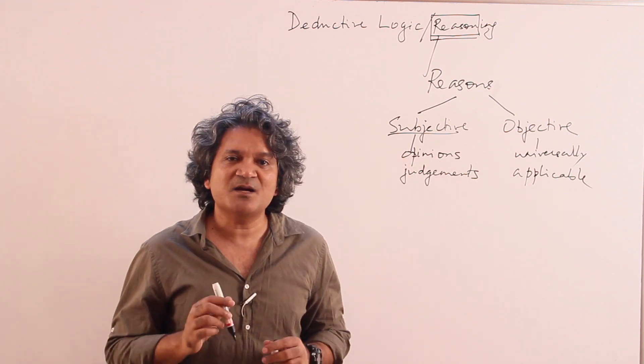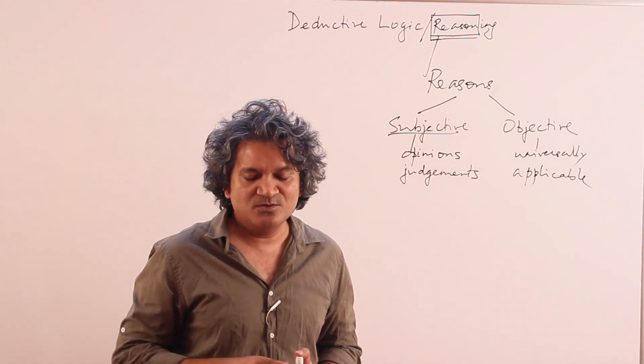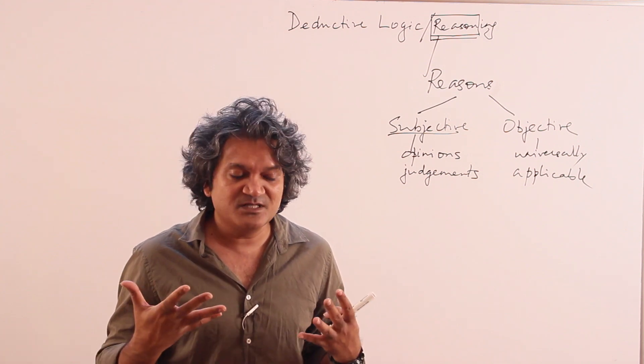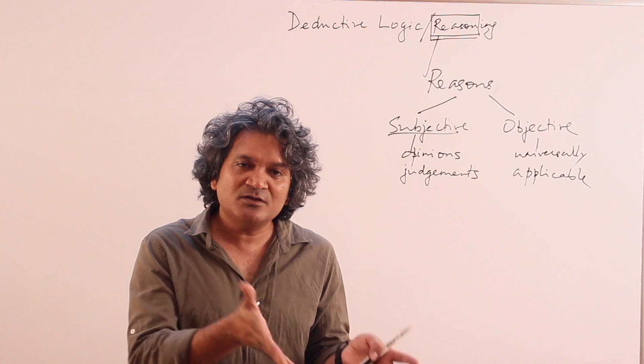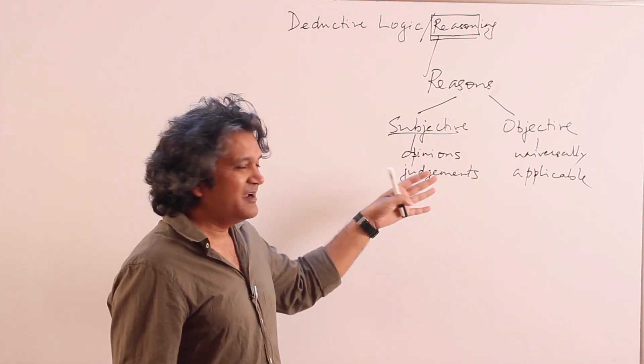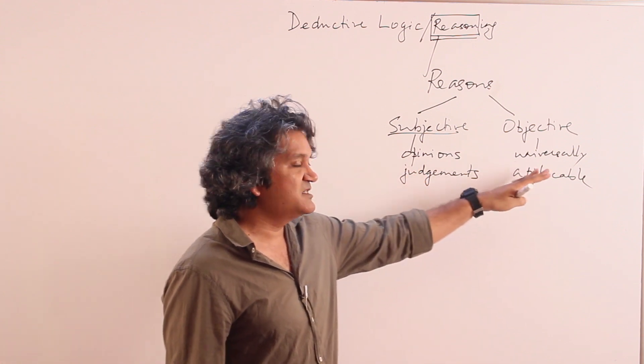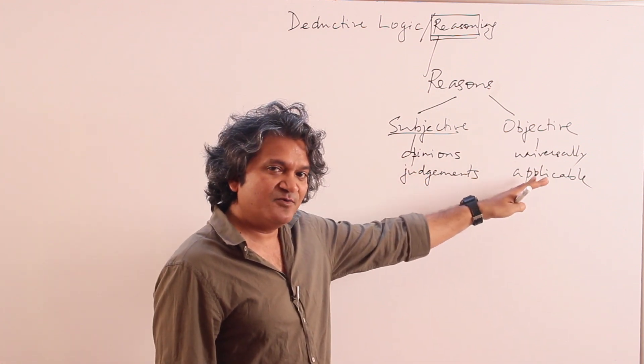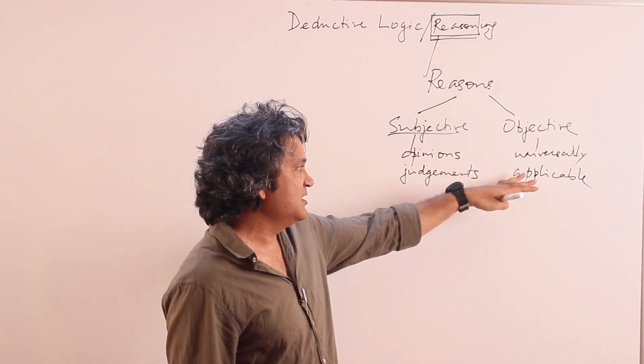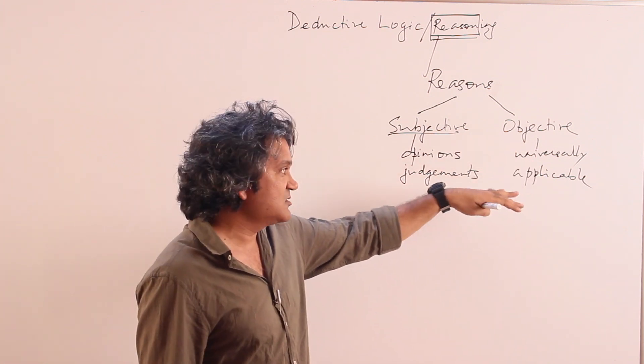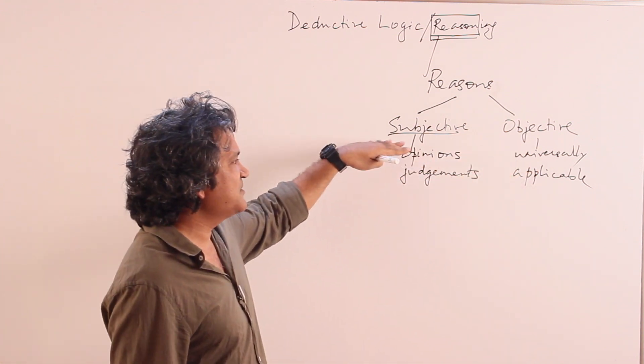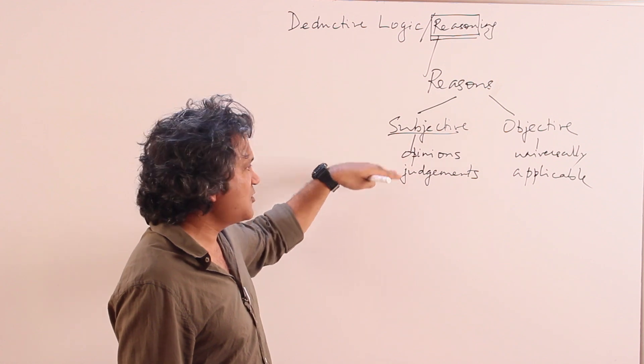So for example, if I say that somebody is a good actor, whoever you want to name, that's a subjective statement because somebody else might not like that person and that person doesn't need to have any reasons for liking or disliking. It's just a personal opinion. Whereas if you say that the apple falls because of force of gravity, you can't say that's your opinion because it can be shown that it falls. In fact gravity can also be measured. So something which is universally applicable is objective.